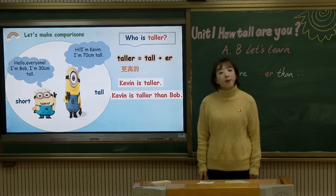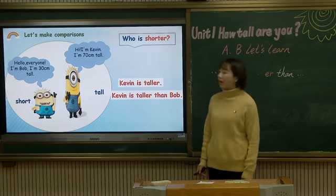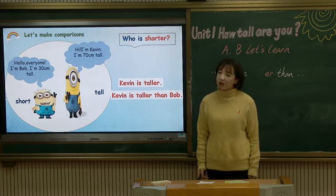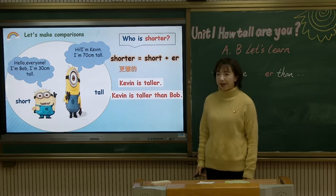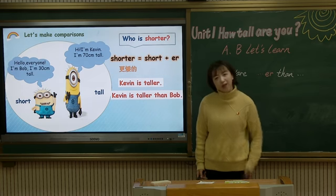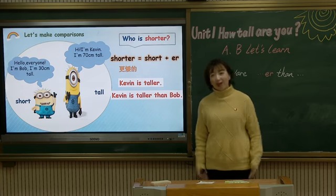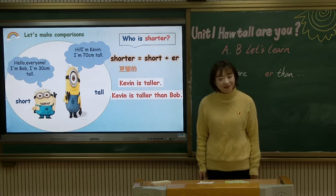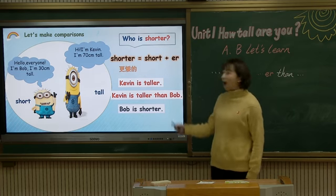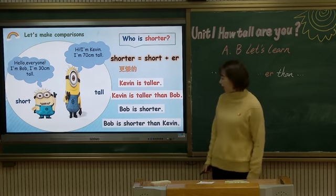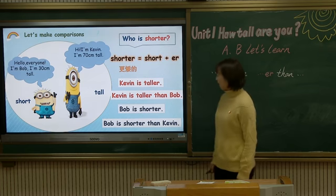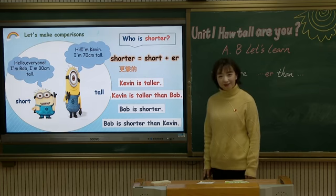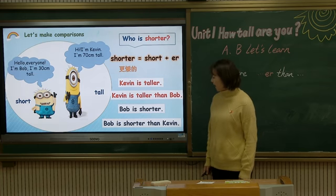Please answer my next question. 请回答我另外一个问题。Who is shorter? 'Shorter' has two parts: 'short' and '-er', which means 更矮的。谁更矮呢？Can you speak out? 你们能说出来吗？You are right! Bob is shorter. Bob is shorter than Kevin. Now please read after Rebecca: Bob is shorter. Bob is shorter than Kevin.